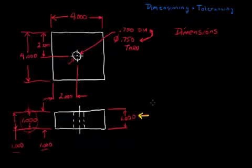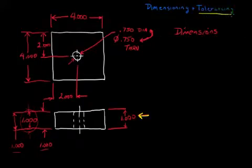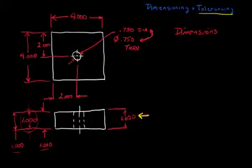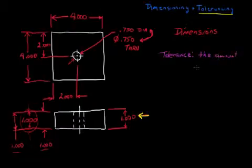What if we had 0.75 inch thick material? Is that close enough? Well, it depends. Whose idea of close do we go by? To solve this problem, we have a concept called tolerancing. What is tolerance?